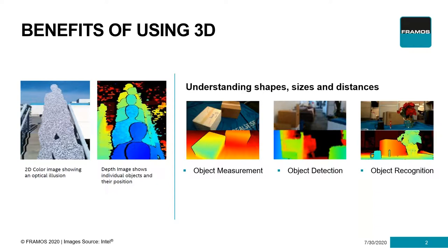Object recognition can also be interesting for retail settings. Right now, very common is to check social distancing — recognize if there are people in the field of view, whether they keep their distance, or to monitor their behavior in certain environments. There are different technologies available, and it is important to understand that there is no all-in-one solution. Every technology has drawbacks and benefits, making it important to understand the technologies available, your application's requirements regarding robustness, accuracy, and the full usage scenario and light conditions to choose the best technology.